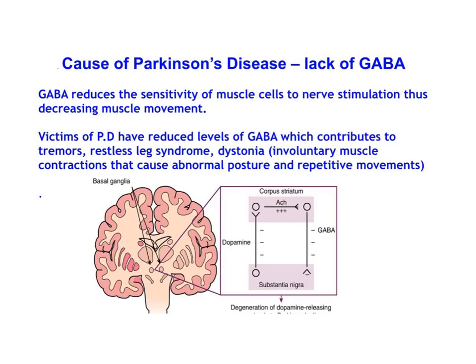Another contributing factor to Parkinson's disease is the depletion of the GABA neurotransmitter. GABA has an inhibitory effect in the central nervous system, and in terms of movement, it reduces the sensitivity of muscle cells to nerve stimulation. With depleted GABA, muscles become overly sensitive, triggering involuntary actions such as tremors and restless leg.